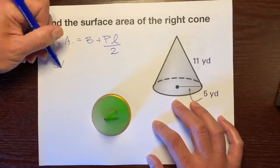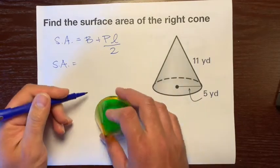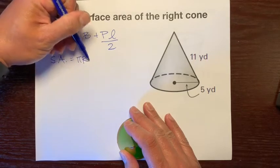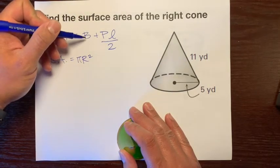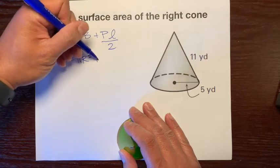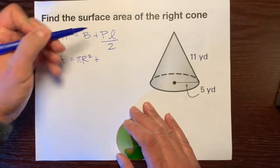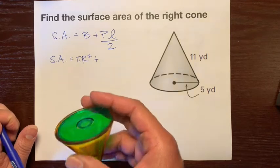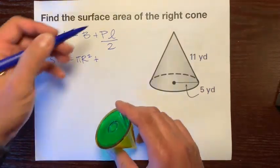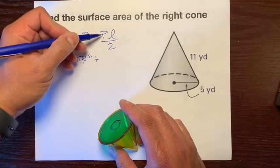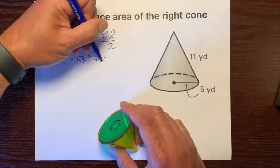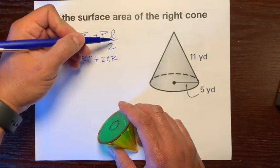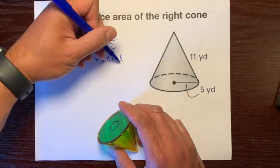So surface area of a cone - the base is a circle, and the formula for the area of a circle is pi r squared. So this B is more specific for a circle: pi r squared plus P, which stands for base perimeter. For a circle, that's circumference, which is 2 pi r. The slant height L still stays the same, and the 2 still goes there.